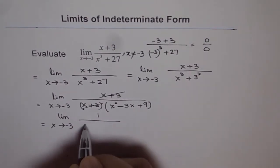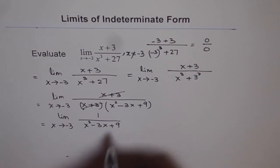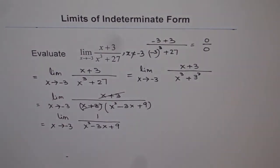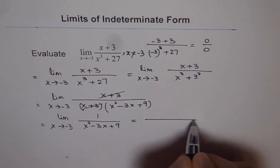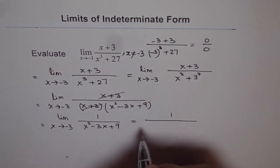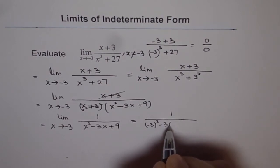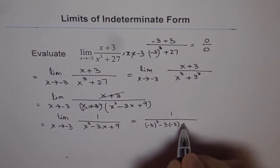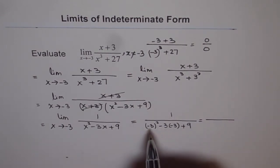So the expression can be simplified as limit of this function x approaches minus 3, and the function is 1 over x square minus 3x plus 9. Now here we can apply the laws of limit, substitute x equals to minus 3, and find the limit. So we get 1 over minus 3 squared minus 3 times minus 3 plus 9.